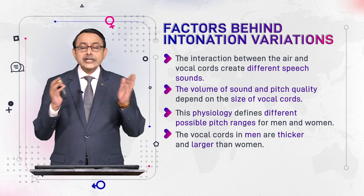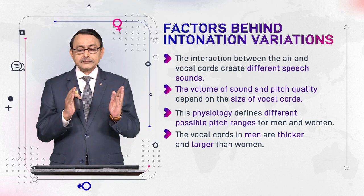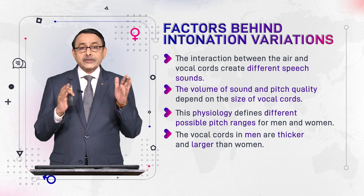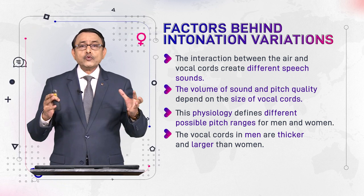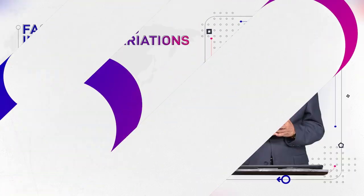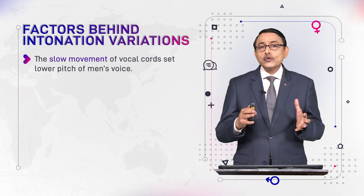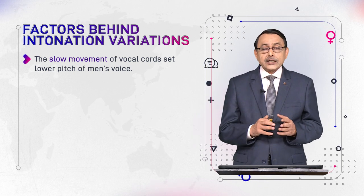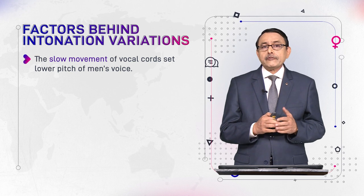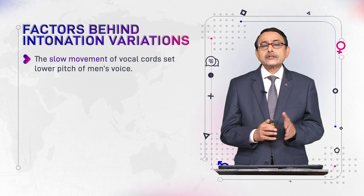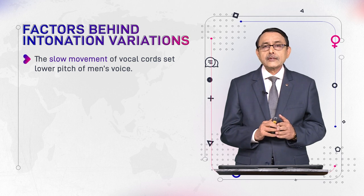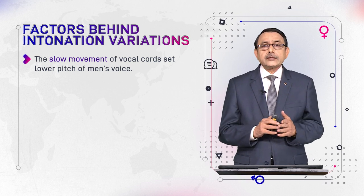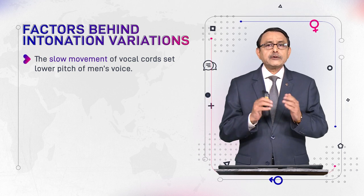The vocal cords in men are thicker and larger than in women. Because they are thicker, their movement will be slow, and slow movement results in low pitch. On the other hand, women's vocal folds are thin and slim, they move quickly, and they create a high-pitched and shrill voice.